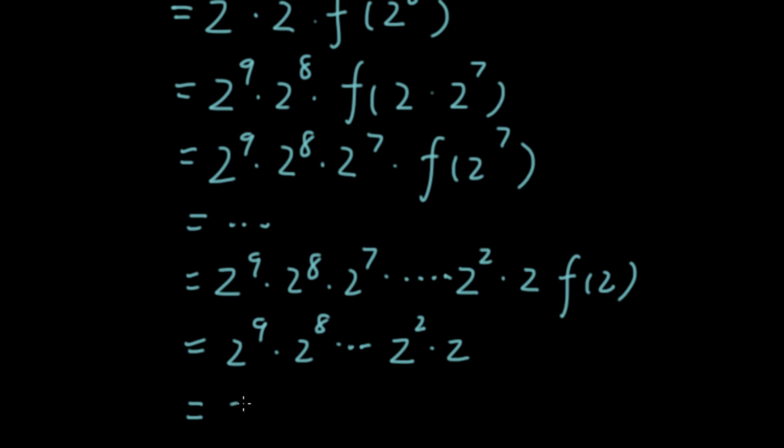So this is equal to 2 to the 9 plus 8 plus 7, plus 2 and 1.